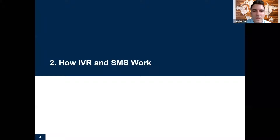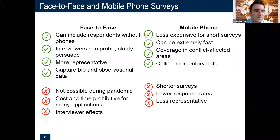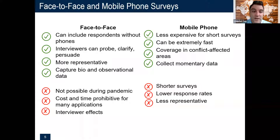Let's take a step back and think about differences between face-to-face surveys on one hand and mobile phone surveys on the other. Face-to-face surveys can include all respondents, even those without phones. You clearly have an interviewer present who can persuade the household to participate, probe and clarify questions. These face-to-face surveys are clearly the gold standard in low- and middle-income countries. And I know in a lot of UNICEF surveys there are biological specimen collection and observational data as well. On the flip side, face-to-face surveys are not really possible now.